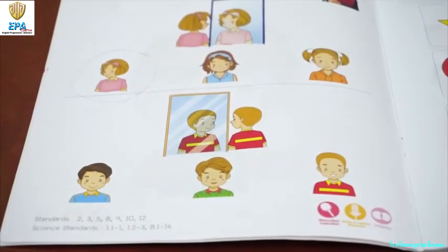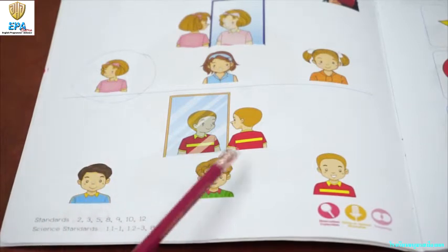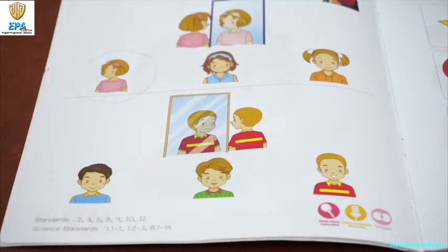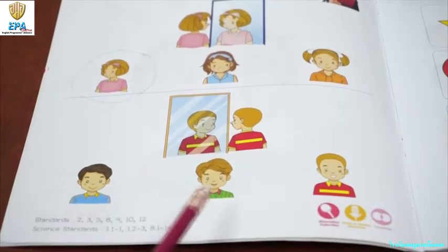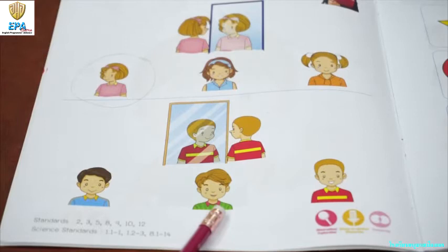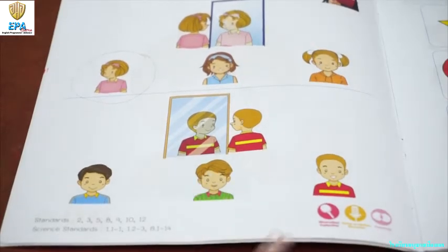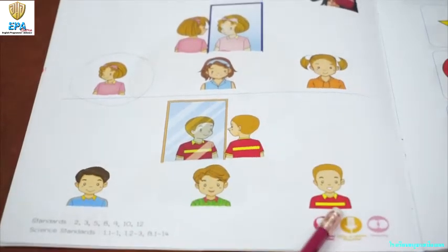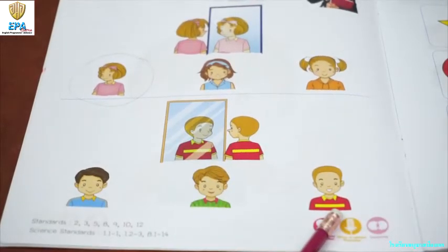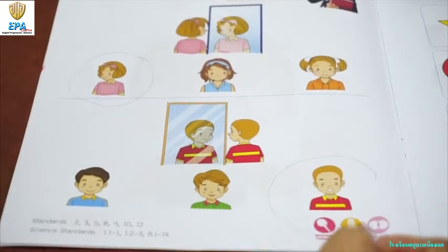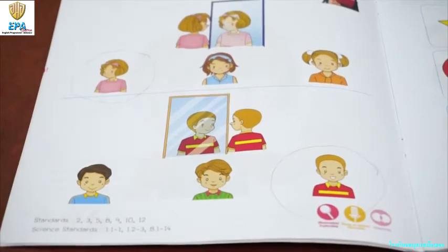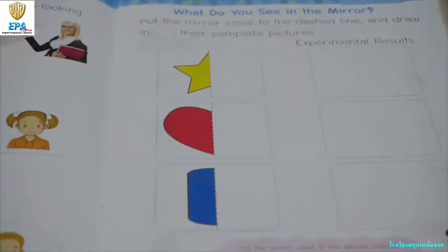Which one is looking in the mirror? Is it this one wearing a blue shirt, this one wearing a green shirt, or this one wearing a red shirt? Very good — this one! Now open your book page 3.